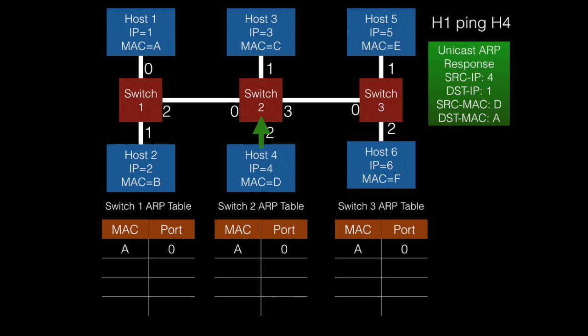Host4 will send this data over to switch2 via port 2. Upon receiving this new packet, switch2 is going to do two things, since this response has both a source MAC ID and a destination MAC ID. It will look at the source MAC ID — in this case D — and see that it does not have that information in its table, so it will update the ARP table so that all data destined for MAC ID D will go out port 2. It will then look at the destination MAC ID — in this case A — and see that it does know how to forward this data, sending it solely on port 0 without flooding the other ports.